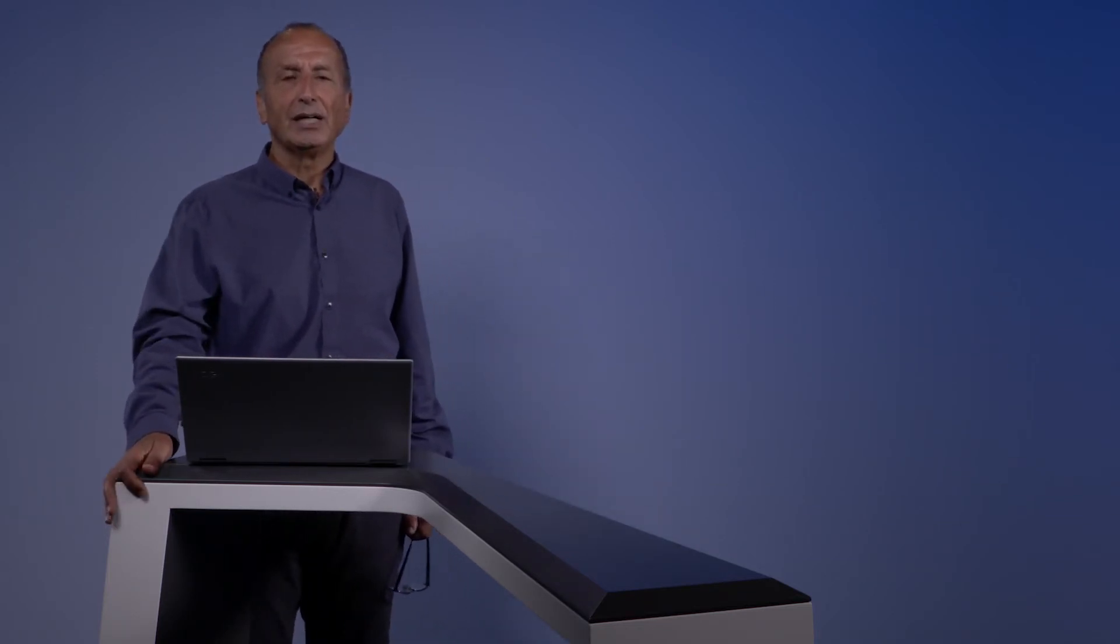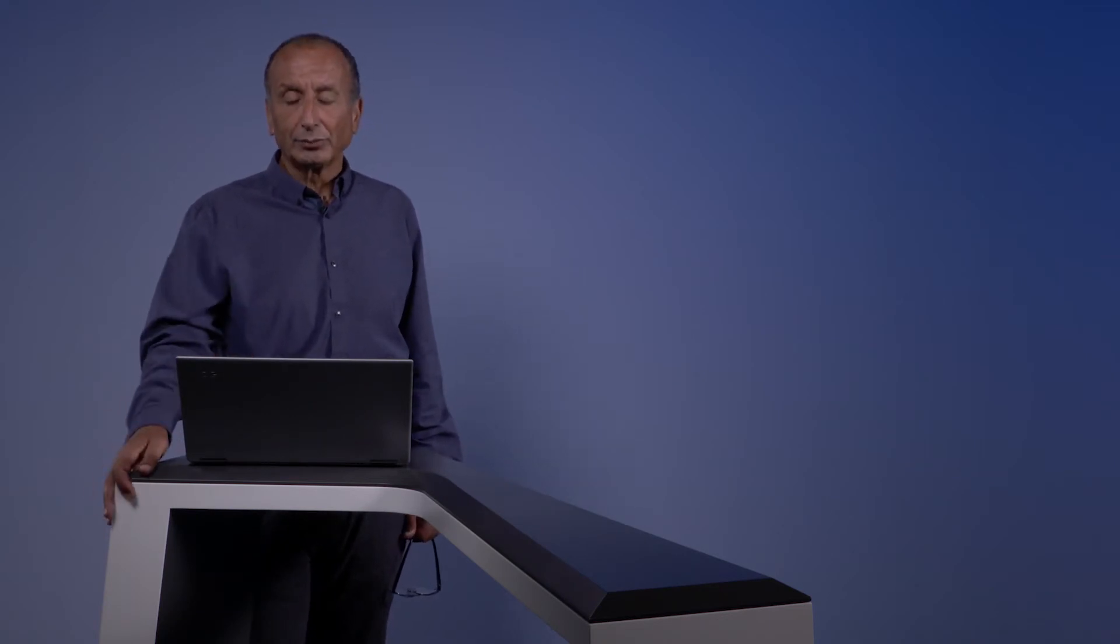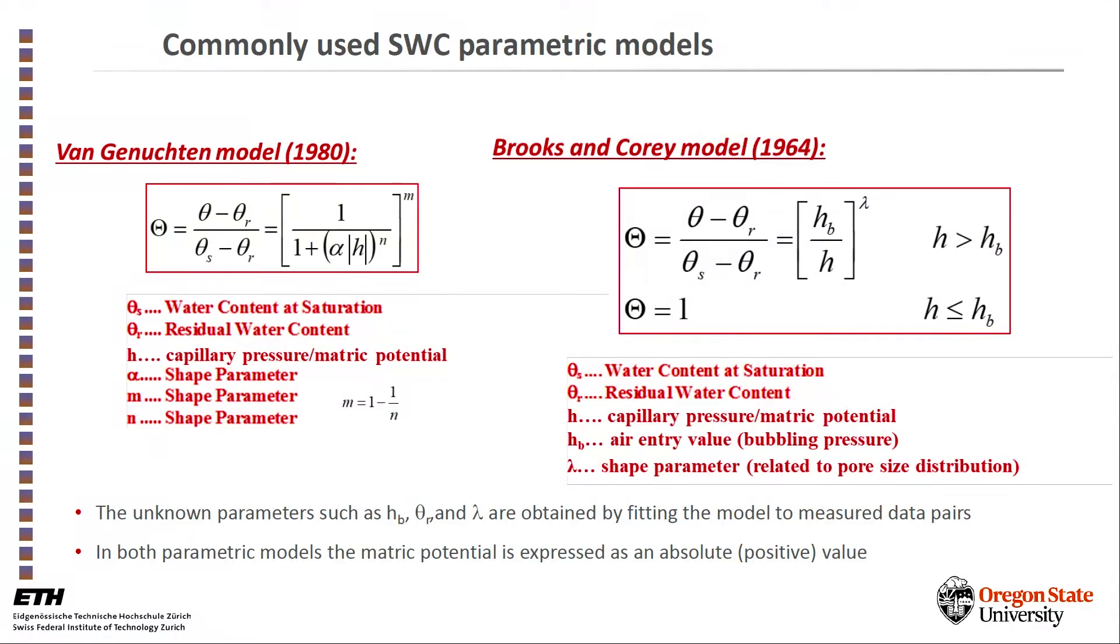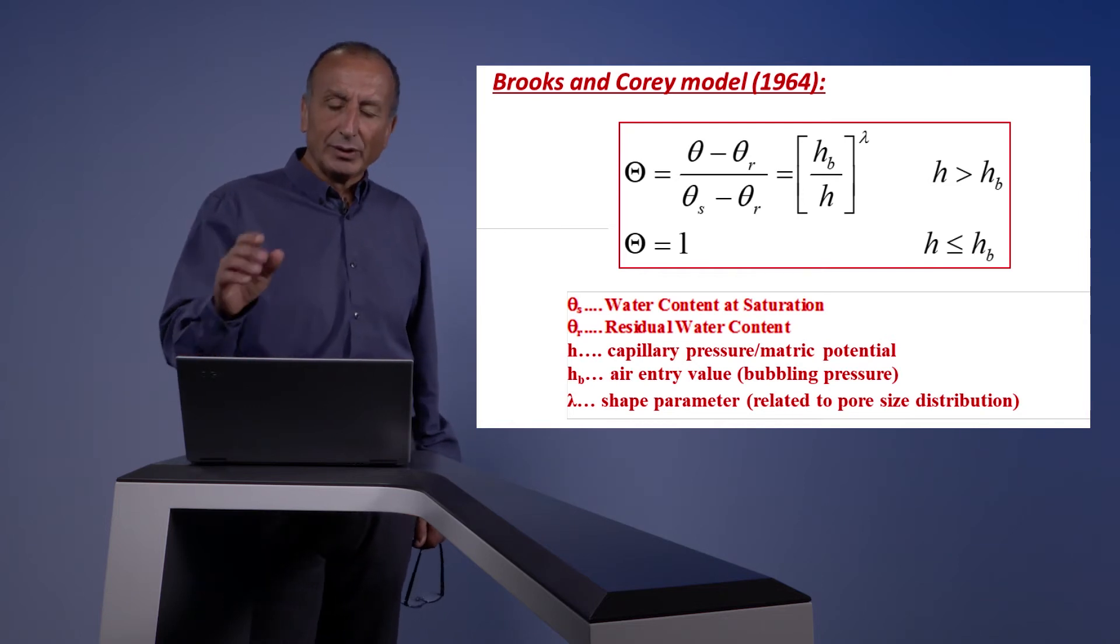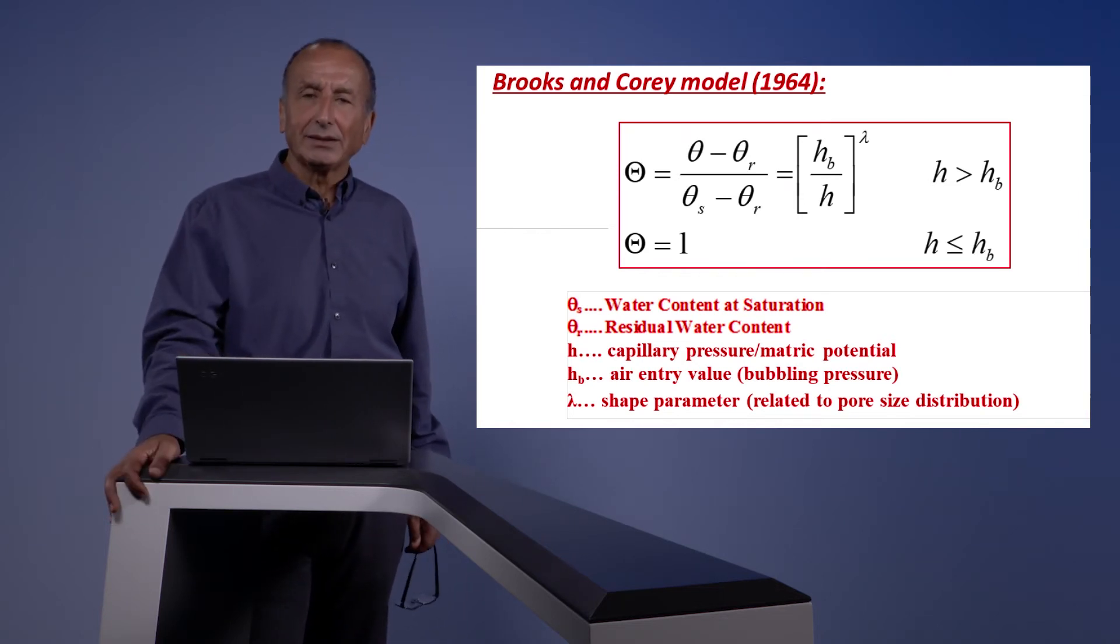So what are the common parametric models that we use nowadays in hydrology? Traditionally, people have used a Brooks and Corey model that was developed in the 60s, in which the non-dimensional water content, that is the water content minus the residual water content over the saturated water content minus the same residual water content, was a power function of the matric potential or the capillary pressure divided by the air entry pressure to some power also called lambda. This is a very compact form that fits many data sets quite nicely.